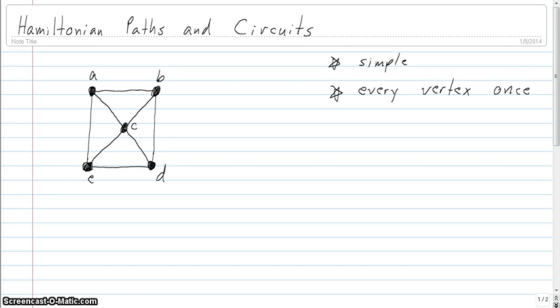In this video we're going to explore the idea of Hamiltonian paths and circuits. There's two key ideas: in both Hamiltonian paths and circuits we want to keep in mind that we're talking about simple paths and circuits. By definition a Hamiltonian path or Hamiltonian circuit is required to be a simple path or circuit, so we know that means no repeated edges. To be Hamiltonian by definition we're going to include every vertex exactly once.